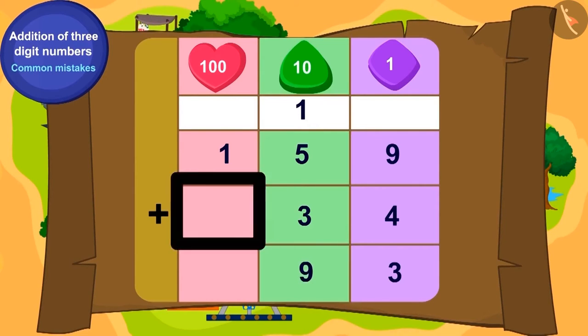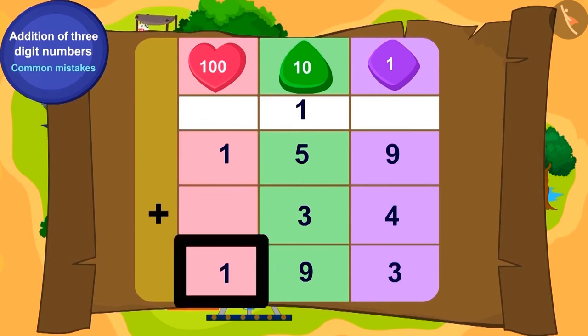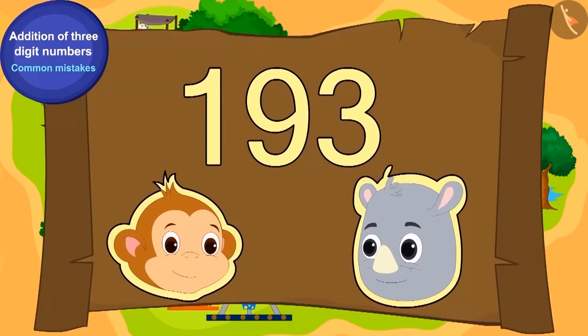Because there is no number in the hundreds place in 34, we will write 1 in the hundreds place of 159 in the hundreds position in this way. Bablu also found the answer to the second puzzle which is 193 toffees.